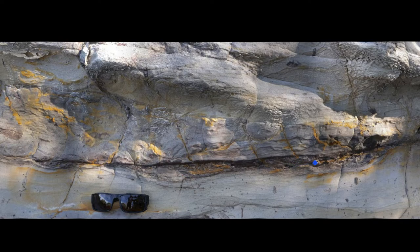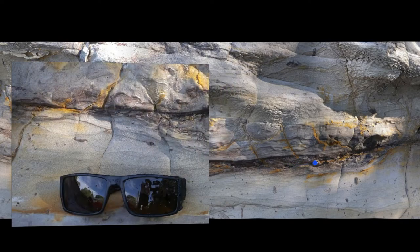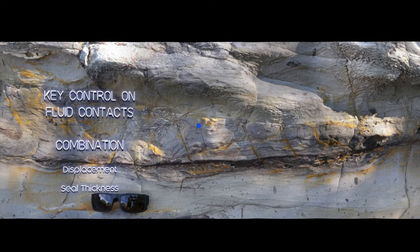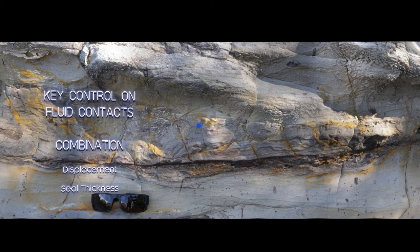If we have a look in detail, things change. Just near my glasses you can see we've actually got no fault rock at all — in fact we've got some sand gouge here. Sylvia De Rosa did a really good paper on this. Fundamentally what we find is that faults change thickness, and what this really means is that for fluid contact controls it's a combination of the fault displacement and the stratigraphic seal thickness, not the fault rock thickness.